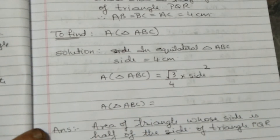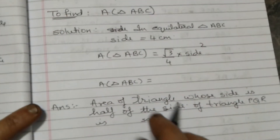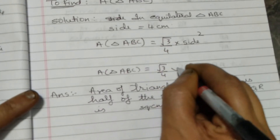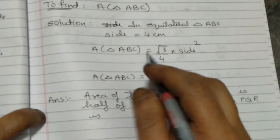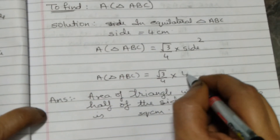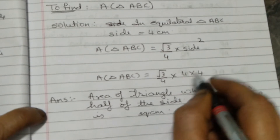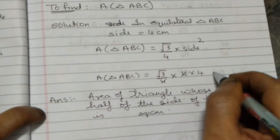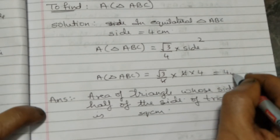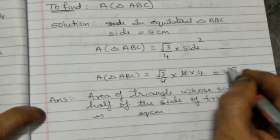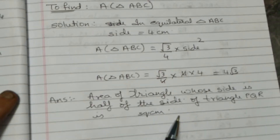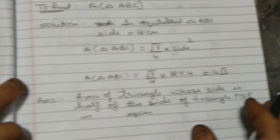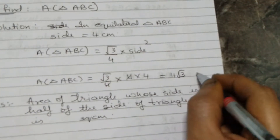Root 3 upon 4 into side square. Side is 4 cm, so root 3 upon 4 into 4 into 4. The 4 and 4 cancel, giving 4 root 3. So the answer is 4 root 3 square centimetre.